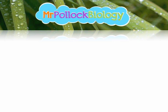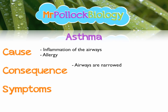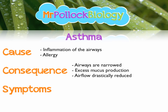Moving on, we're going to look at asthma - again, cause, consequence, and symptoms. The cause of asthma is inflammation of the airways, and most of the time this is due to allergy - dust or pollen getting into your airways and causing an inflammatory immune response. This causes your airways to swell up. The consequence of that swelling is your airways are narrowed, which is bad. You also start to produce excess mucus, which is also bad. All of this stops air getting down to your lungs as readily, so the airflow is drastically reduced.